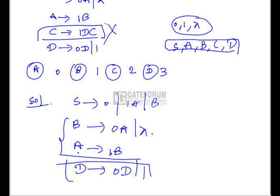D does derive a terminal string directly with small '1', but D is not obtainable from the starting symbol. So D also becomes useless. There are two useless symbols: C and D. Therefore option C is the correct answer.